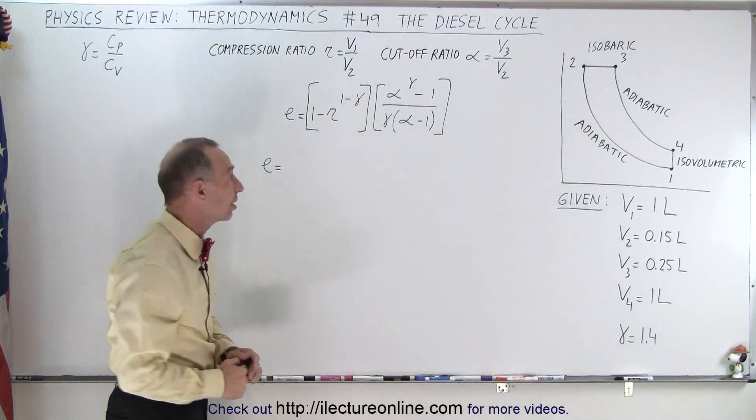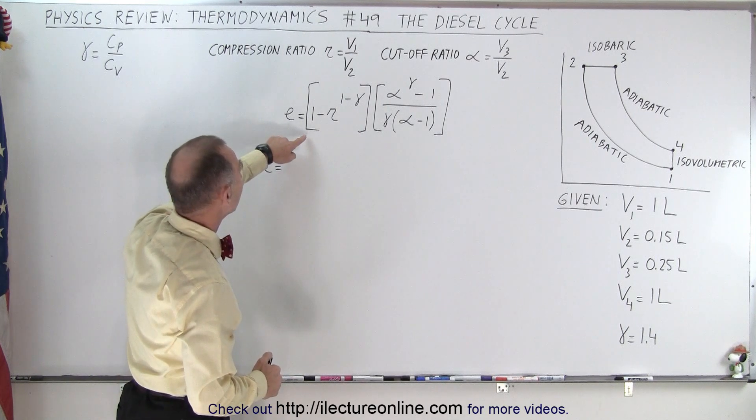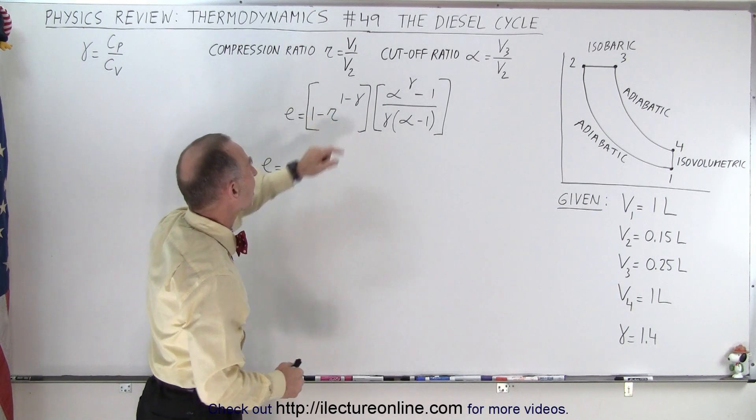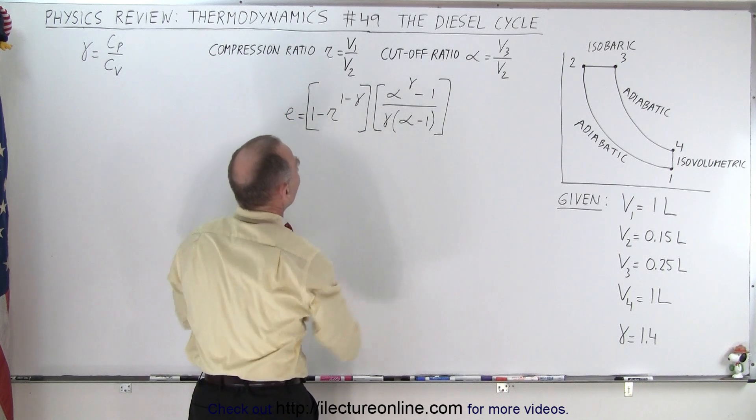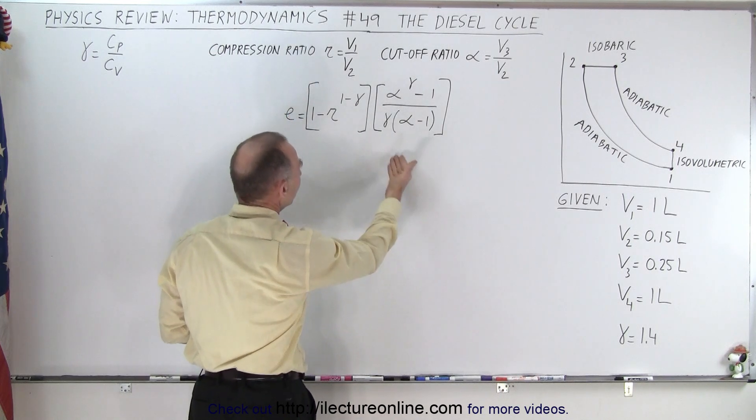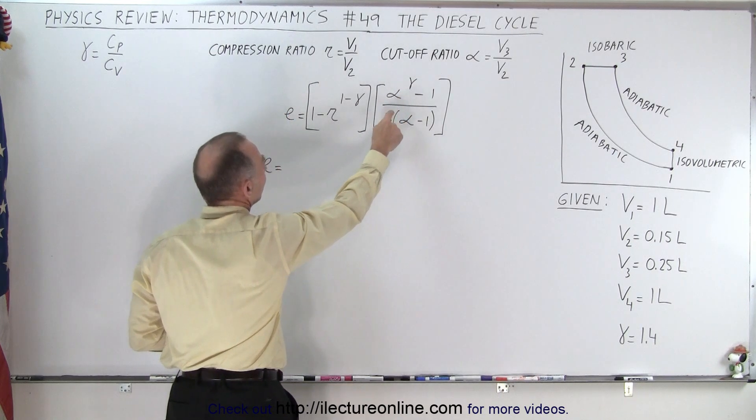Then the efficiency of a diesel engine can be written as 1 minus R to the 1 minus gamma. Now this is the same that we have for the auto cycle, but then that's multiplied times this, where we have...